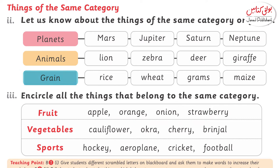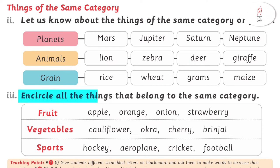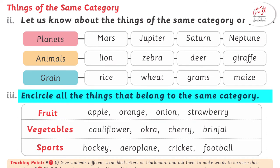We have grains, pulses, etc. as examples. In the next question: encircle all the things that belong to the same category. You have been asked about sports, vegetables, and fruits.